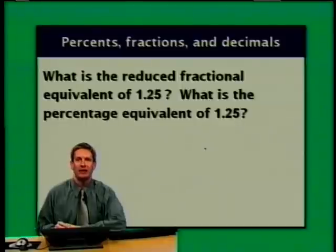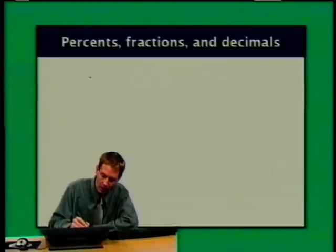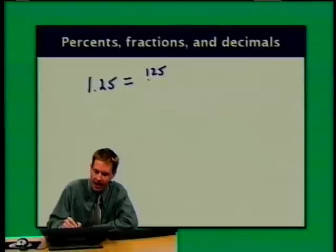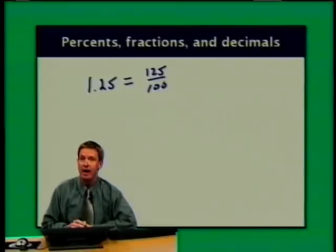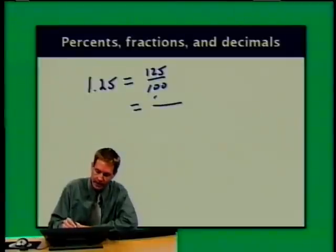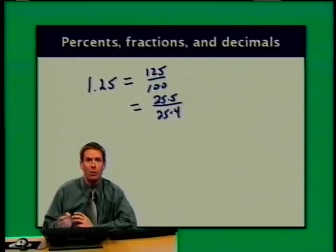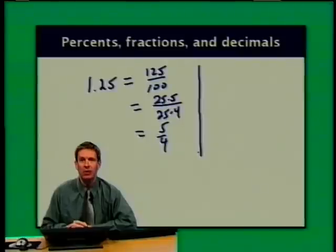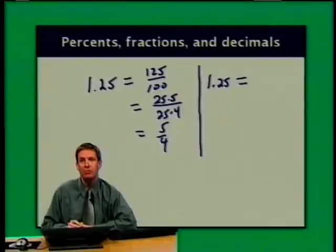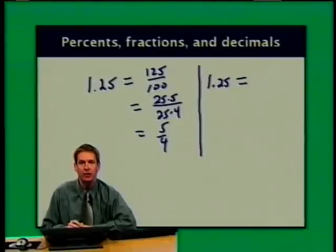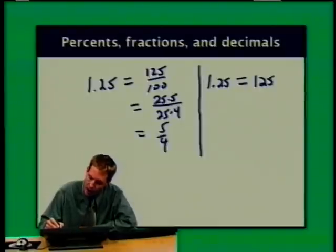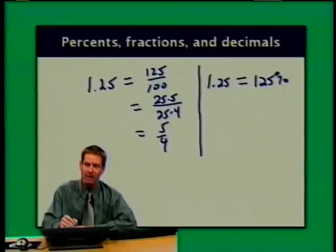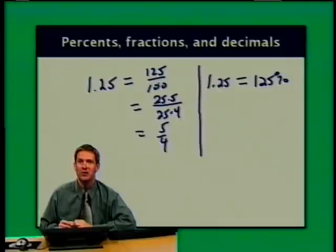What is the reduced fractional equivalent of 1.25, and what is the percentage equivalent? For the fraction: 1.25 equals 125 over 100. Both 125 and 100 are divisible by 25 — 125 is 25 times 5, and 100 is 25 times 4 — so the reduced fraction is 5 fourths. For the percent: shifting the decimal two places right, 1.25 equals 125%. Note that 125 per 100 is 125 percent.